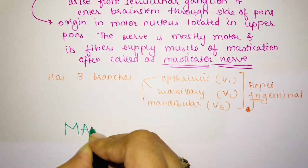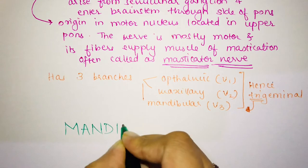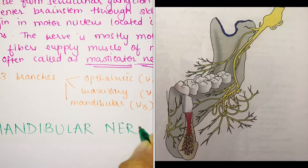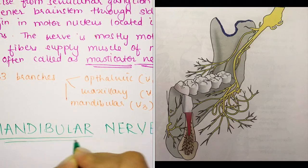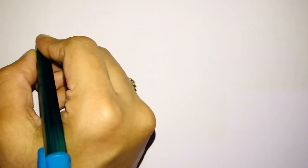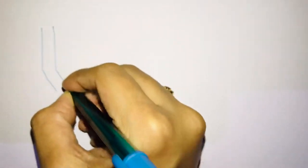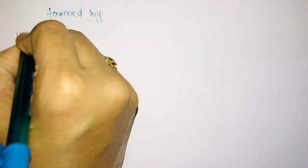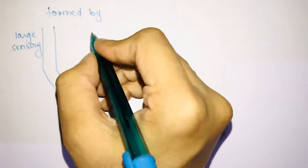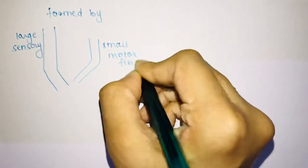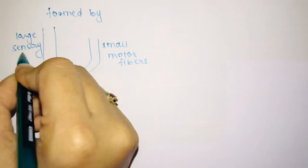Now starting with the main topic — the mandibular nerve. It is the third branch of the trigeminal nerve, and I'll explain its complete course and distribution. The mandibular nerve is the largest of the three divisions of the trigeminal nerve. It has both sensory and motor fibers. It is the nerve of the first branchial arch and supplies all structures derived from that arch. It has a large sensory and a small motor fiber component.